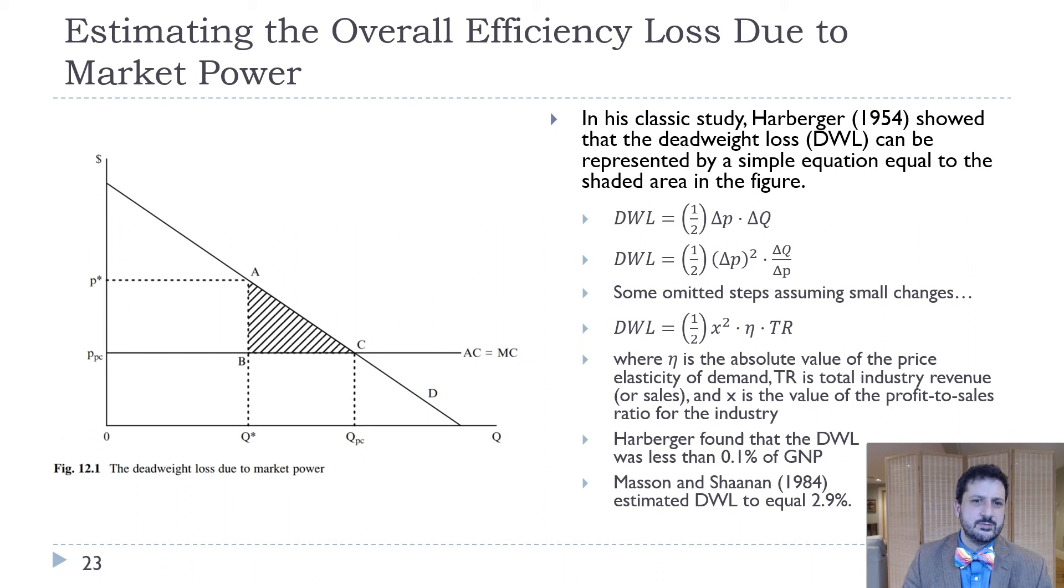Finally, what we want to think about is estimating the overall efficiency loss due to market power. We've really already done this in class in calculating that deadweight loss triangle. It's really just one half times the change in price, which is the difference between the actual price and the perfect competition price, and the change in quantity, which is the difference between the perfect competition quantity and the actual quantity. That's usually the easiest way to do it. But what the book shows is that you can use a different method, where the deadweight loss is equal to one half times X squared, where X is the value of the profit to sales ratio for the industry times eta, which is that absolute value of the price elasticity of demand times total revenue.